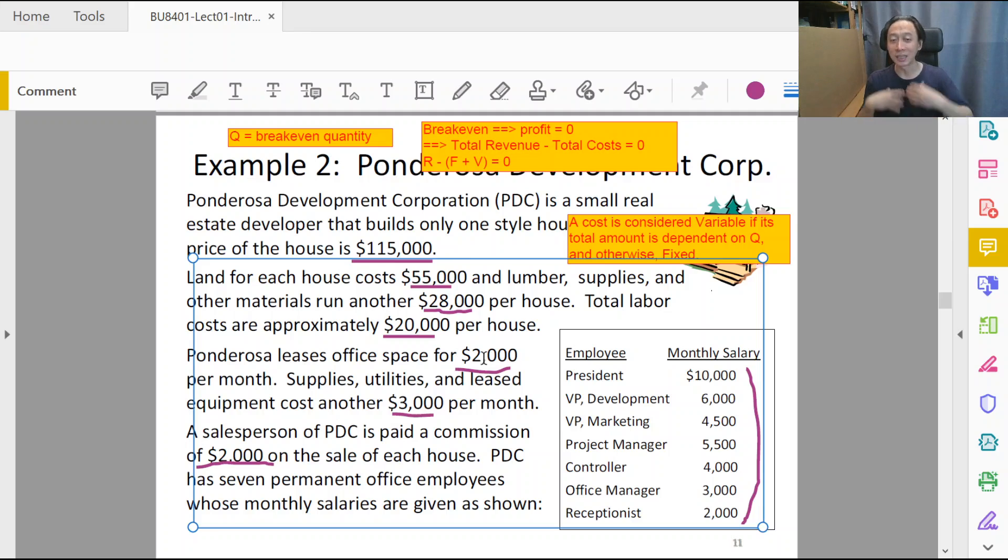What if we sell 10 houses in that month? Do we pay two thousand times ten? No, we still pay two thousand. So since it's not altered by the change in the variable of quantity being sold, it is fixed relative to q. It is independent of q.